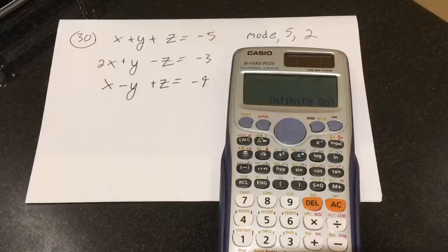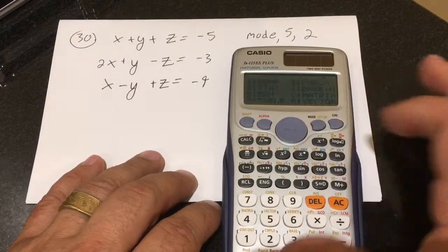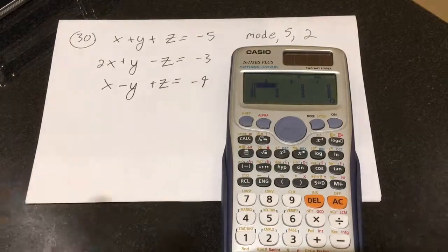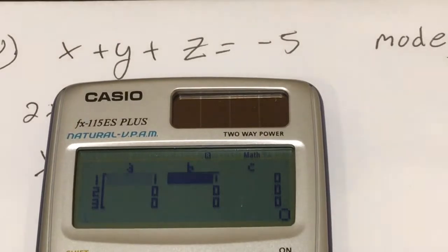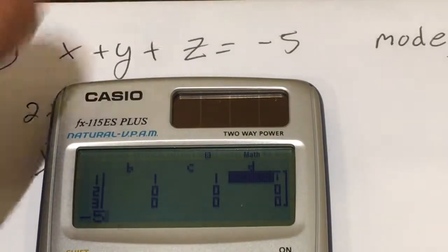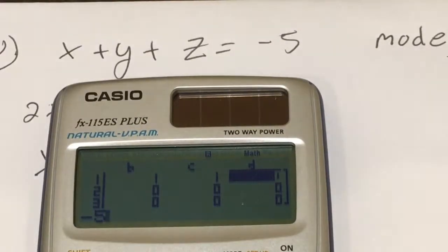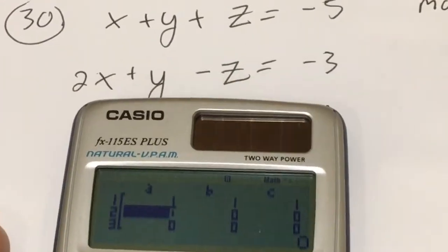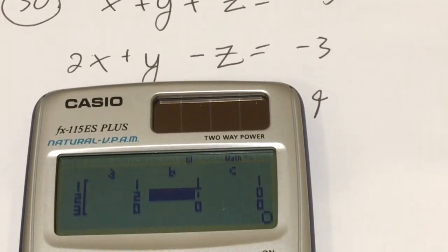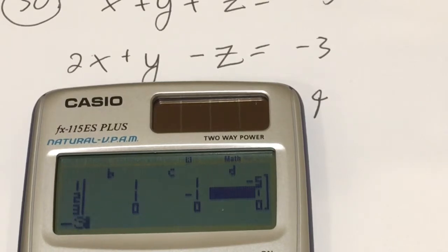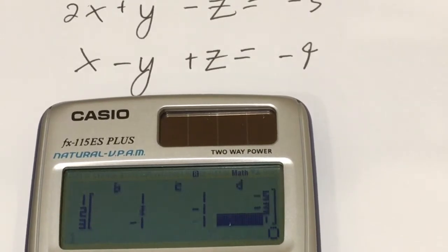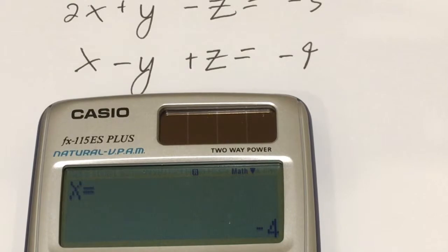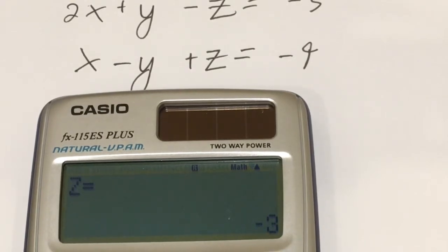Number 30 looks really daunting but it is not — it's a large system with 3 equations and 3 variables. This one can be solved using mode 5, 2, which gives a big array. I enter the top row: 1, 1, 1, negative 5. Next row: 2, 1, negative 1, negative 3. Next row: 1, negative 1, 1, negative 9. It gives me x equals negative 4, y equals 2, z equals negative 3.